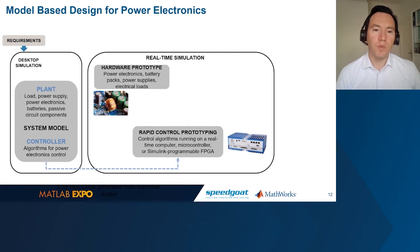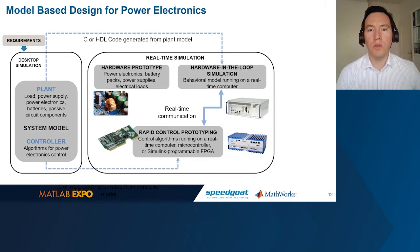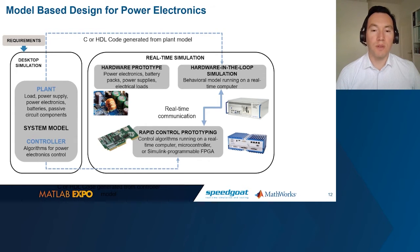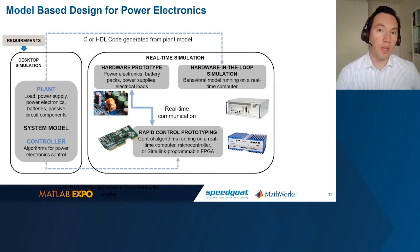Afterwards, we can generate optimized code to a microcontroller. And before connecting to the actual hardware, we can use hardware-in-the-loop testing with a SpeedGoat target machine to thoroughly test the firmware and the interfaces of this controller. Once all tests pass, we can connect to our actual hardware prototype.